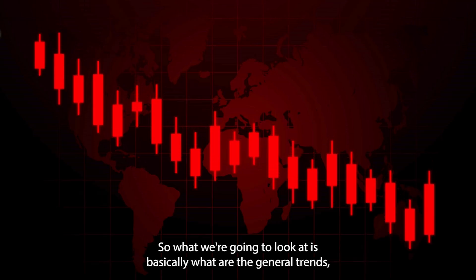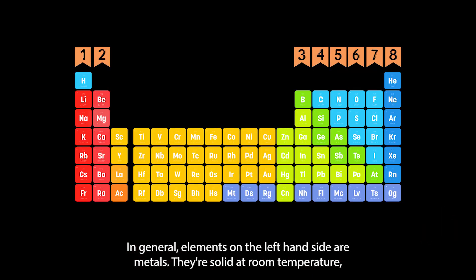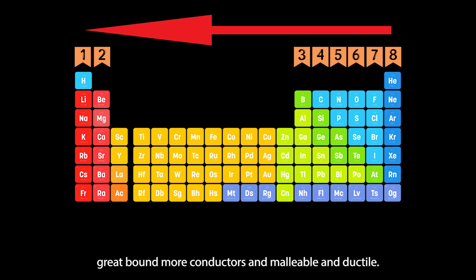What we're going to look at is basically what are the general trends in terms of general properties that we see element and its position on the periodic table. In general, elements on the left hand side are metals, they're solid at room temperature, great electrical conductors, great thermal conductors, and malleable and ductile.